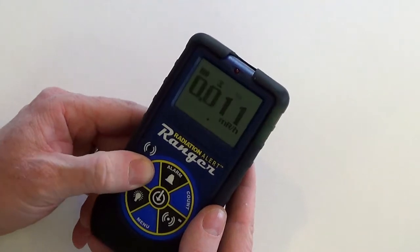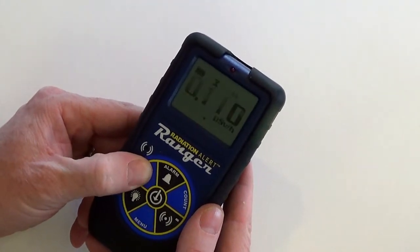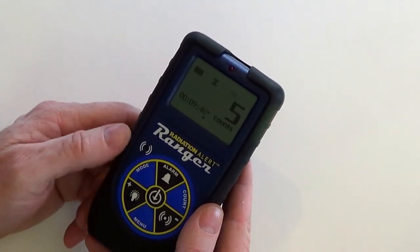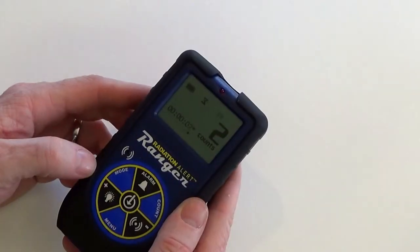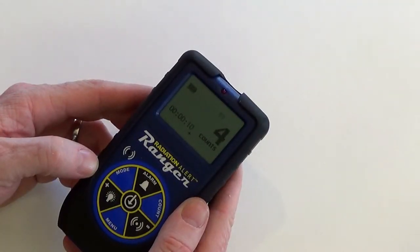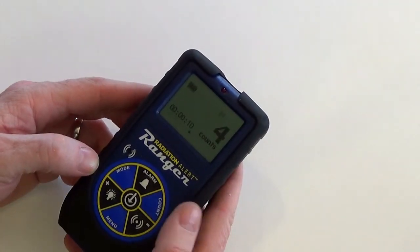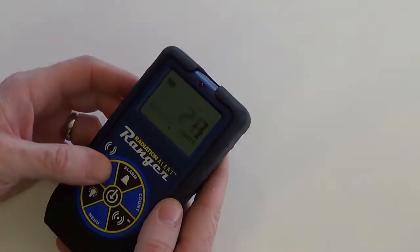You can scroll through the various modes while taking a timed count. Continuing to scroll through the modes will bring you back to the count screen. Two beeps indicates that the count has completed. If you're in another mode screen, the hourglass icon will remain solid until you switch back to the count screen.